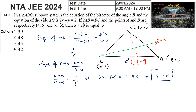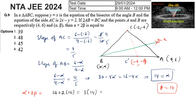So α = 14, and since α = β, β = 14 as well. Therefore, α + 2β = 14 + 2(14) = 3 × 14 = 42. So option D is the answer.